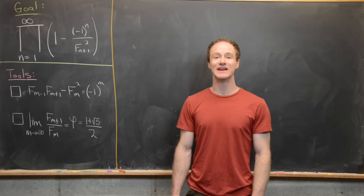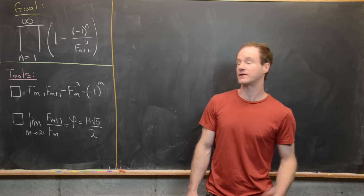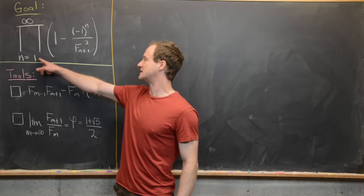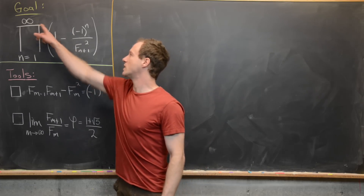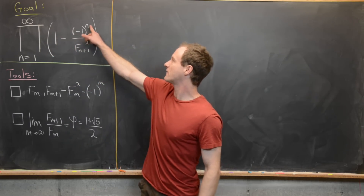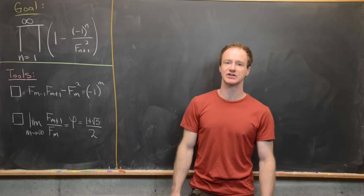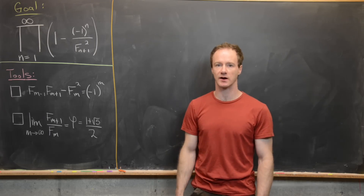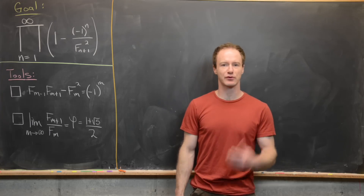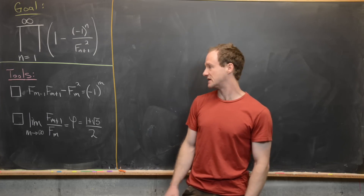Here we're going to derive a nice infinite product identity involving Fibonacci numbers. We're going to look at the product as n goes from 1 to infinity of 1 minus negative 1 to the n over the (n+1)th Fibonacci number squared. We're going to use two tools, which we will prove, to keep this video self-contained.